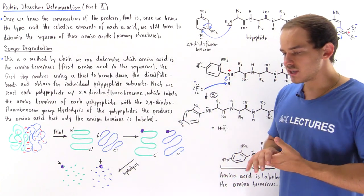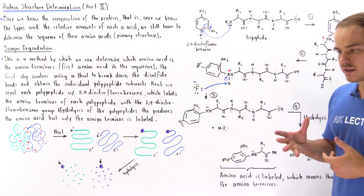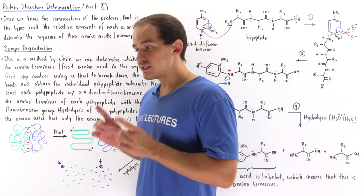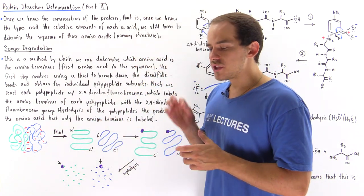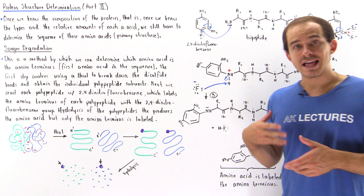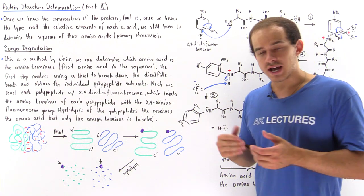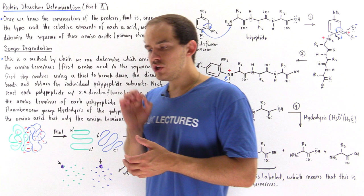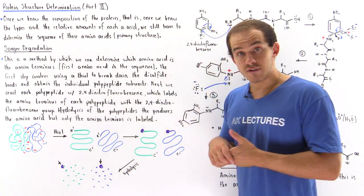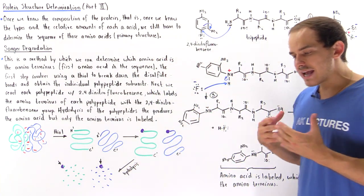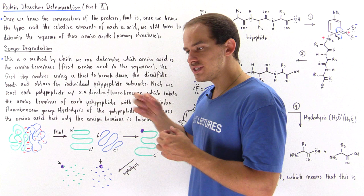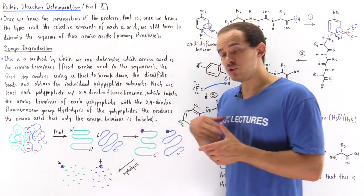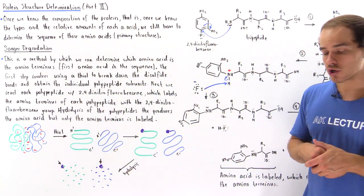In the previous lecture, we discussed the method by which we can determine what the composition of our protein is — what the types of amino acids are and the relative amounts of those amino acids inside our protein. Even if we know the composition, we do not actually know what the sequence is of those amino acids, so we do not know what the primary structure is.